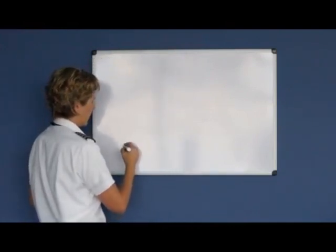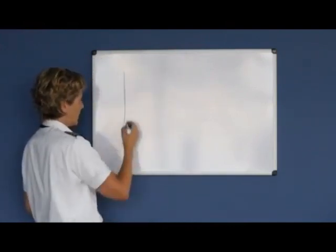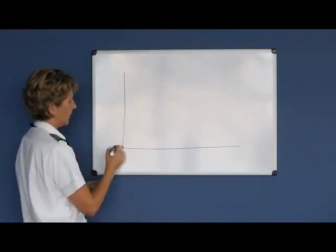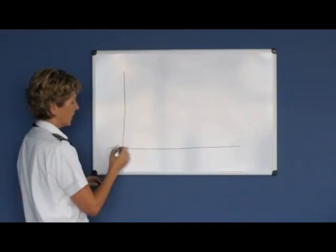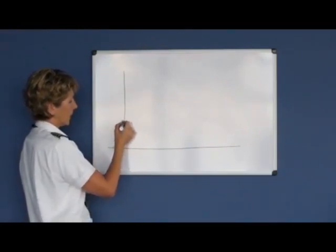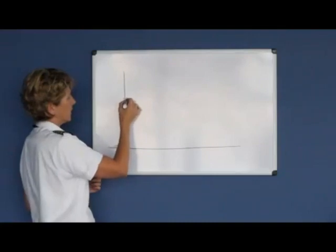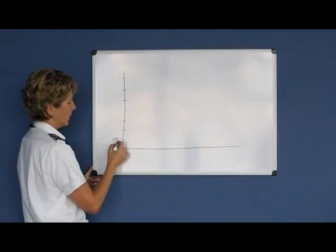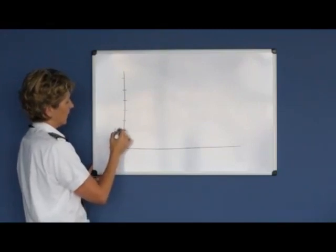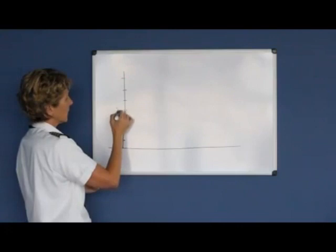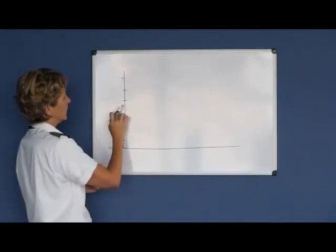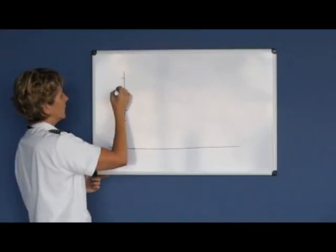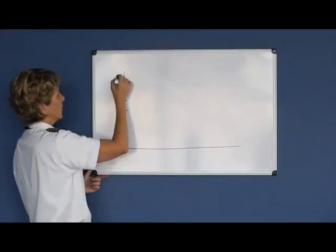If we look at a standard atmosphere or standard lapse rate, we'll use the standard temperature starting at sea level of 15 degrees Celsius. For every thousand feet we go up in a standard atmosphere, the temperature drops 2 degrees Celsius per thousand feet. So when you go up a thousand feet, the temperature will be 13, 11, 9, 7, 5, 3, 1, and so on.